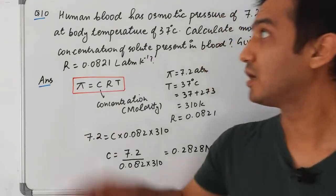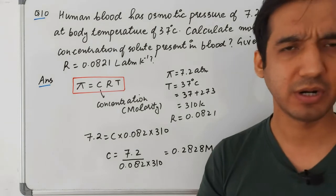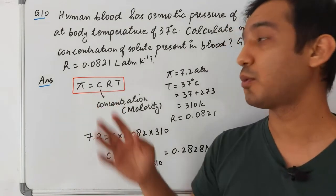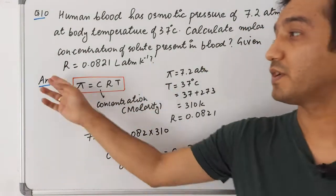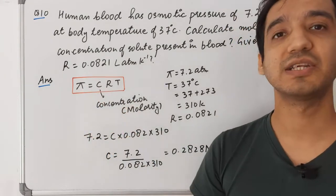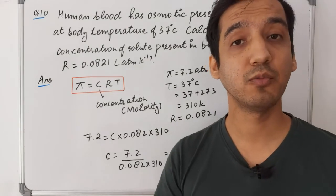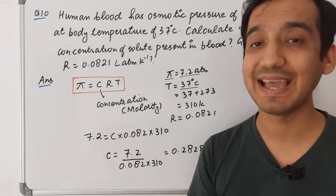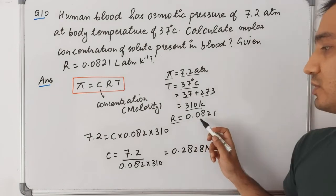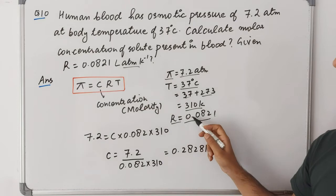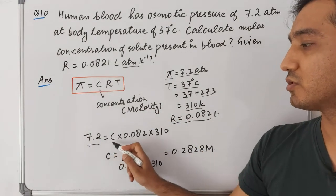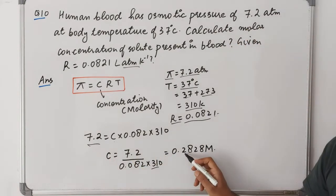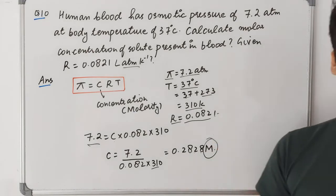Question 10: Human blood has an osmotic pressure of 7.2 atm at body temperature of 37°C. Calculate the concentration of the solute. Using π = CRT: C = π / (RT) = 7.2 / (0.0821 × 310) = 7.2 / 25.45 ≈ 0.2828 mol/L. Temperature is converted to Kelvin: 37 + 273 = 310 K. The answer is expressed in terms of molarity (mol/L).